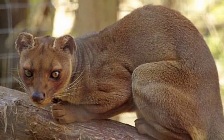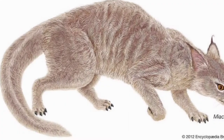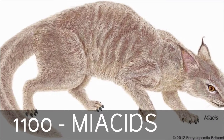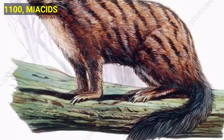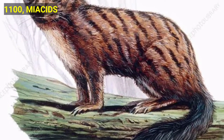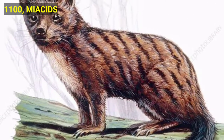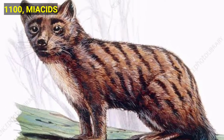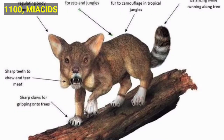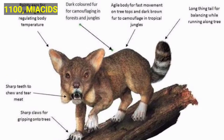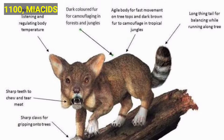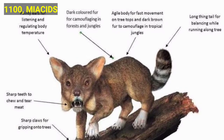The evolution of leopards all started with miacids. Miacids were the primitive animals that began the evolution of many modern animals in the world today. This animal gave rise to cats, bears, dogs, skunks, mongooses and hyenas. Miacids existed 62 to 63 million years ago for approximately 29 million years. This species resided in Eurasia and North America and inhabited tropical rainforests.